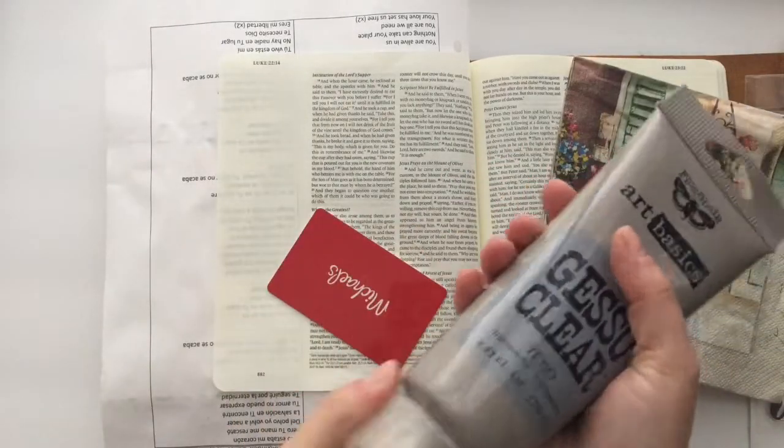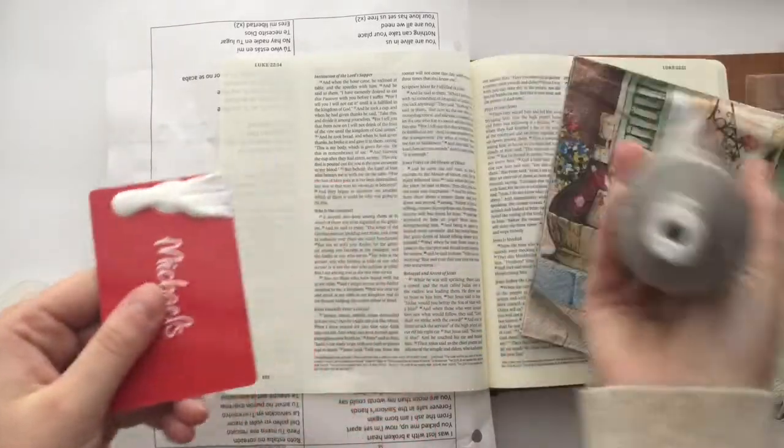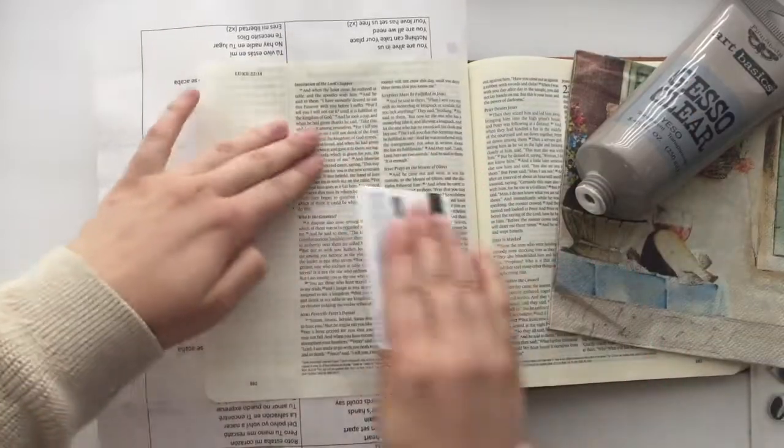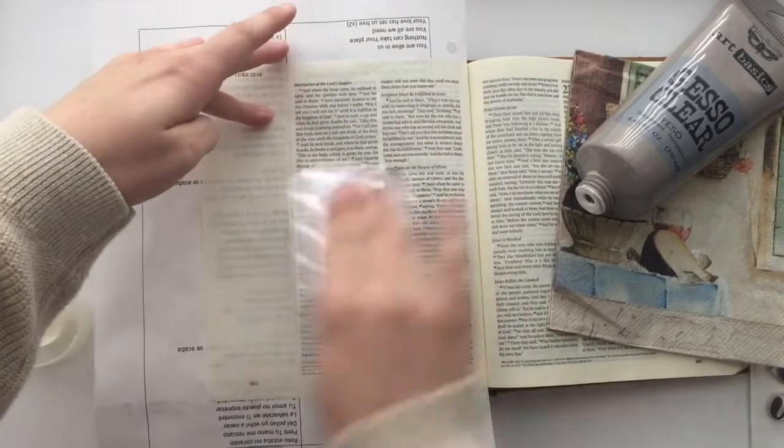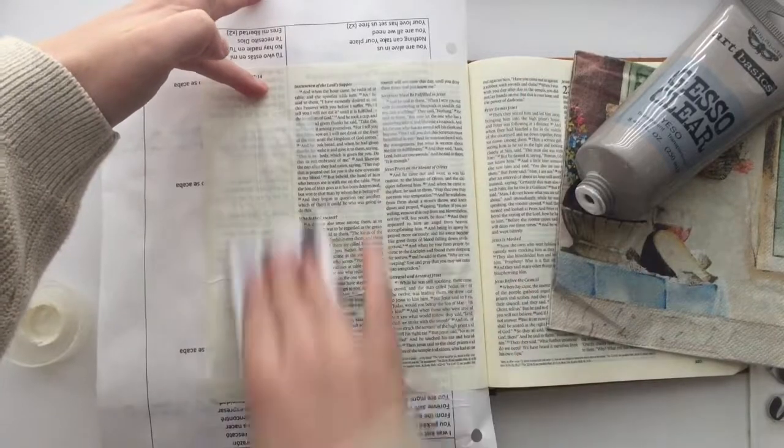And so the technique today we are using is napkins. Now learn from my mistake. I have not used this technique in a while and I was silly and put the gesso down before I had prepped the napkin and then the gesso dried and I had to put more down.